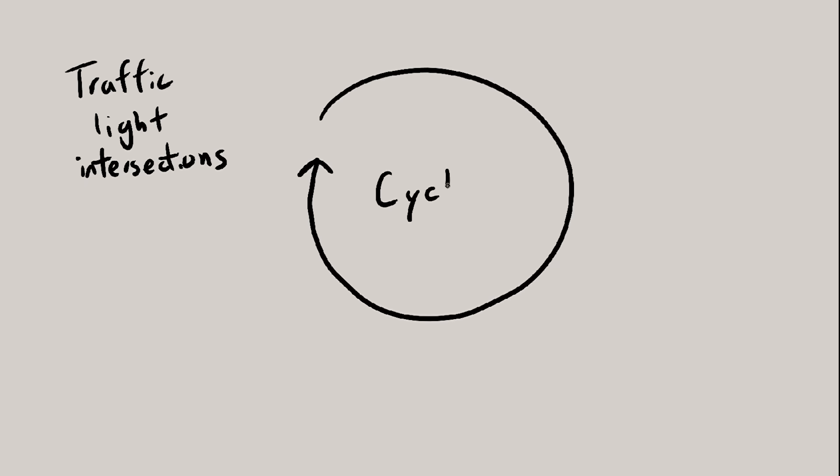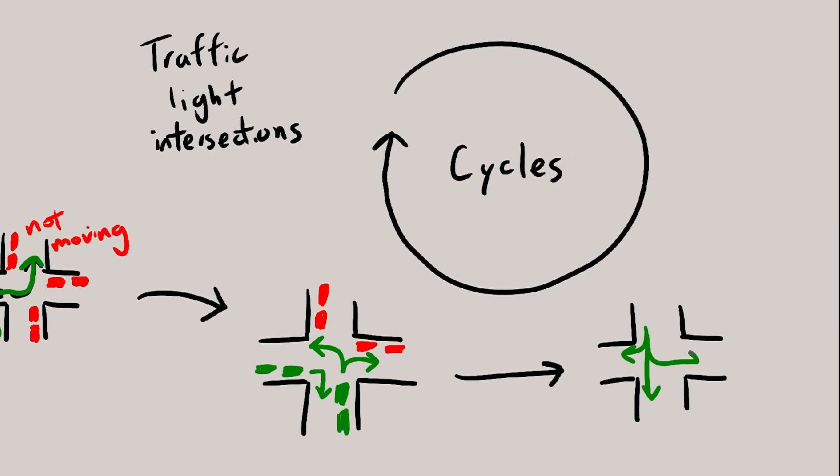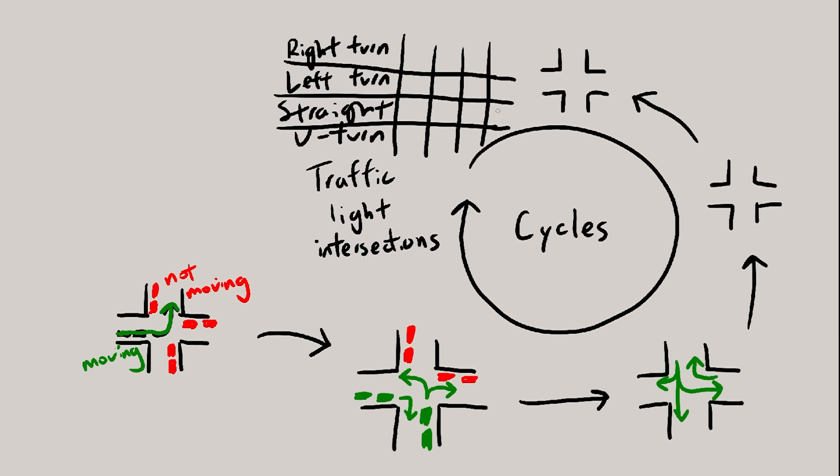You know how traffic lights have cycles? So for example, at some point, these cars might be moving and these other cars won't be moving, and then they'll switch to another configuration, then another, then another, until every possible path has been cycled through so that no one is stuck waiting for a green light. And at that point, it'll go back to the first configuration and start cycling again.